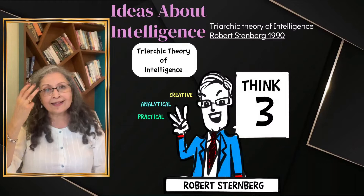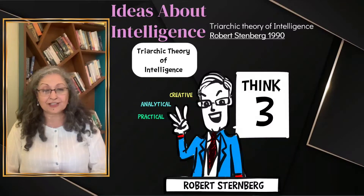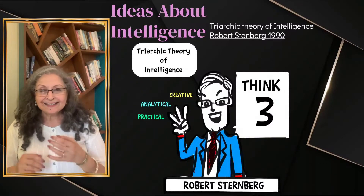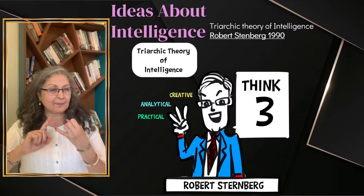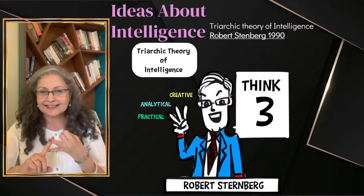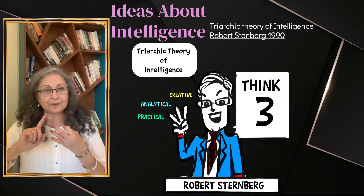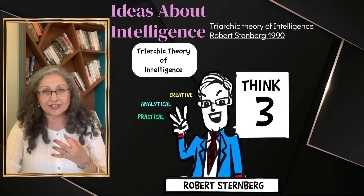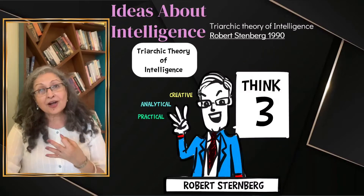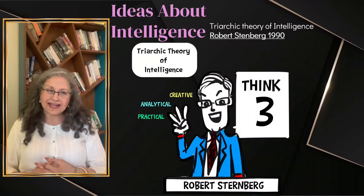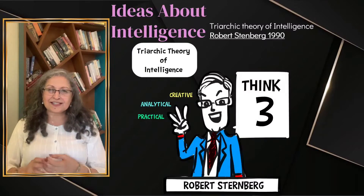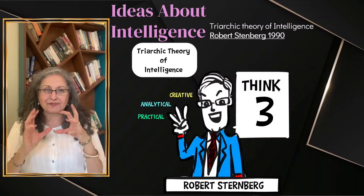Robert Sternberg talks about a triarchic theory of intelligence. He says there could be creative intelligence, analytical intelligence, and practical intelligence. I thought I'd build a story to illustrate this, since stories make it easy to understand — that's the way our brains remember and recall for a long time.